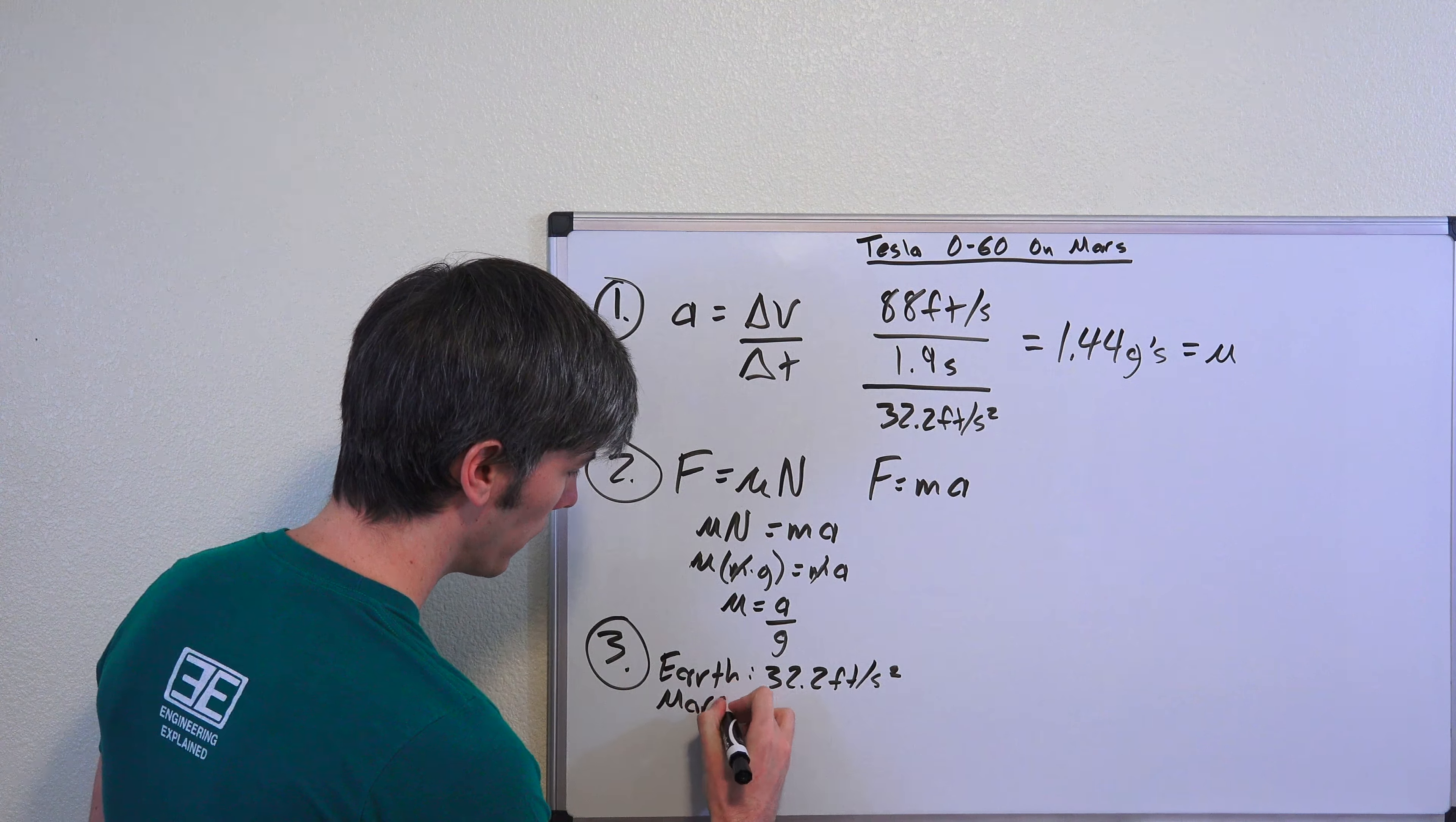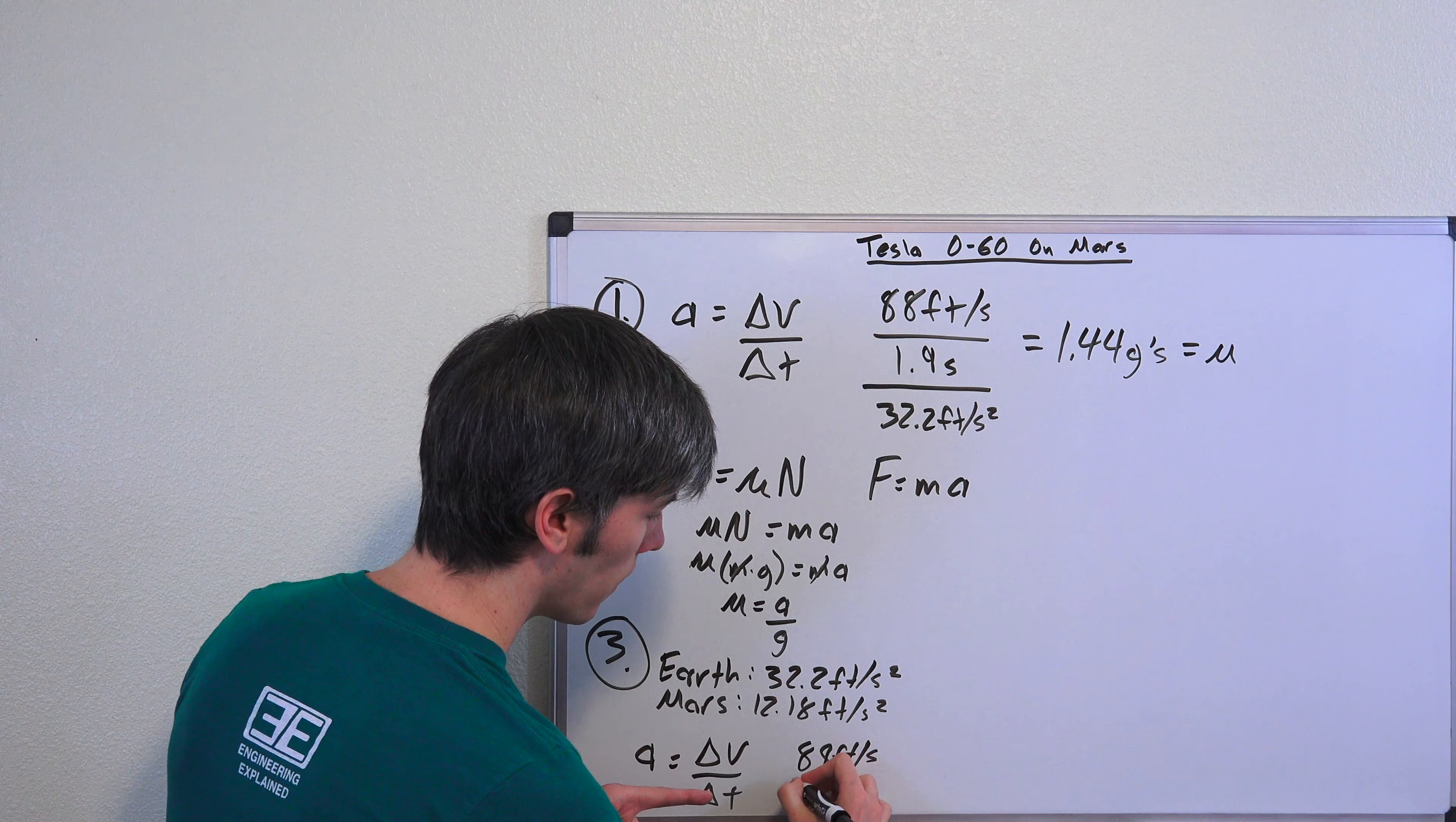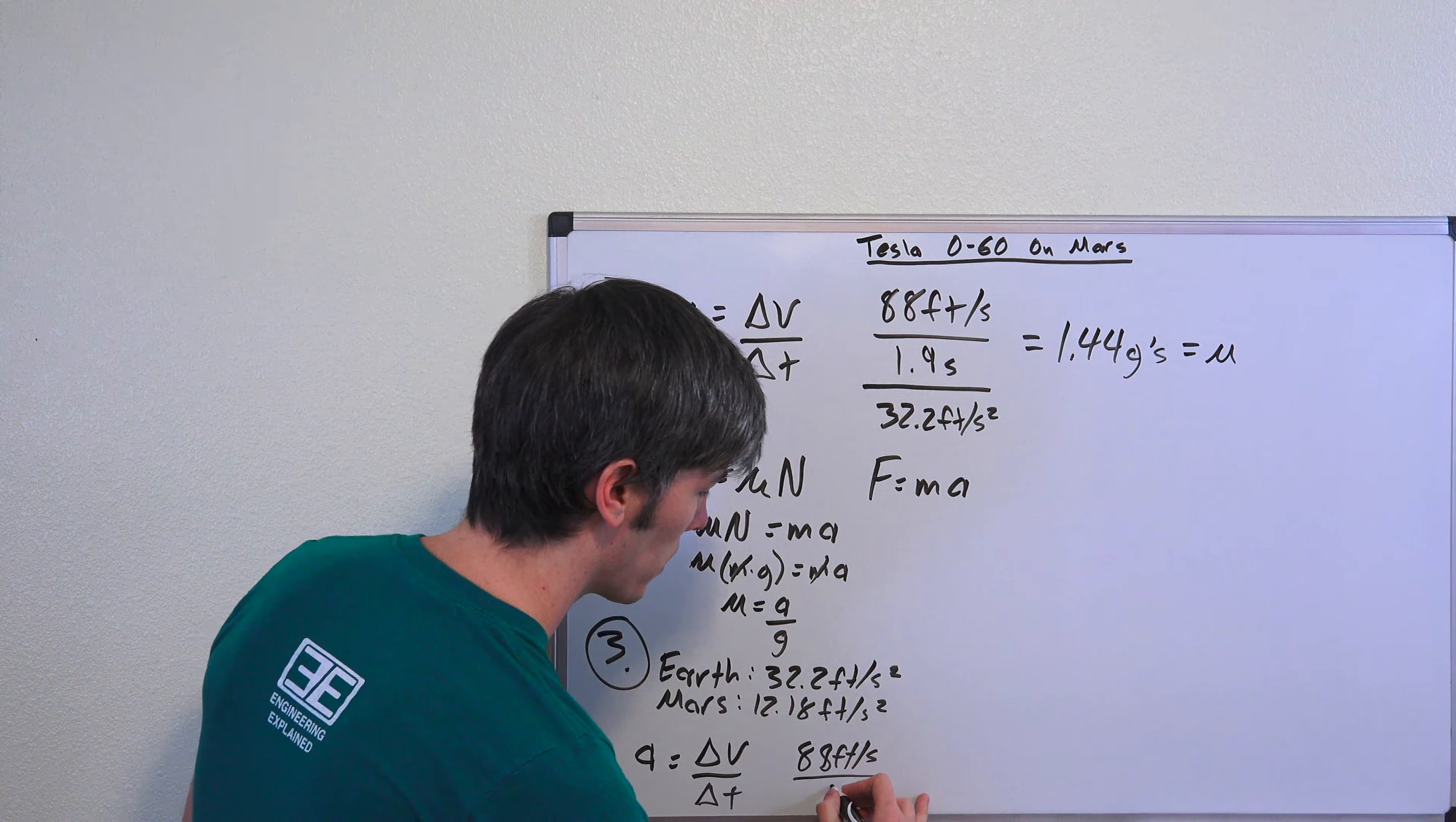Okay, so now we're trying to figure out how fast can this thing accelerate to 60 miles per hour? So acceleration equals change in velocity over the change in time. The change in time is what we're trying to figure out. So change in velocity, 88 feet per second, just like previously we're trying to hit 60 miles per hour. We don't know what time is. And what is acceleration?